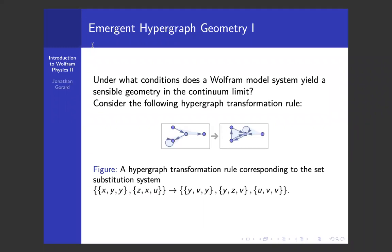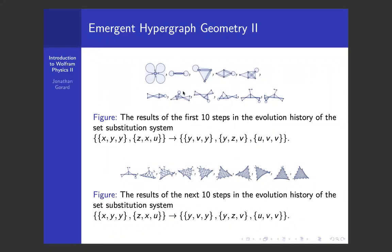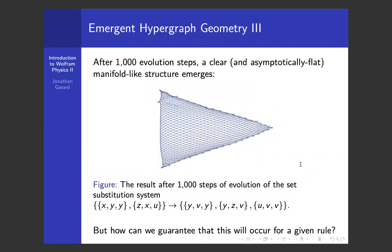The first question is: given a Wolfram model system, how can we determine if the hypergraph we get out, when we take the continuum limit as it gets arbitrarily large, is indeed a Riemannian manifold? Here's an example of a hypergraph produced by a set substitution system. If we run it for 10 evolution steps it does some slightly odd things, but if we run it for another 10 steps we start to see a grid-like structure. If we run it for a thousand steps, we see a very clear grid-like structure that looks like an asymptotically flat manifold. But how can we make the idea that it is manifold-like more precise, and how can we determine — given a rule — whether it will produce a manifold-like or more exotic hypergraph?